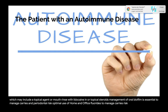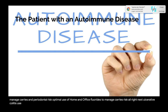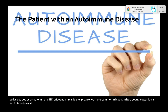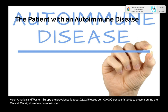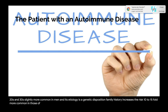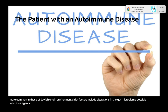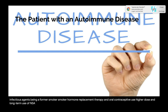Ulcerative colitis (UC) is an autoimmune IBD affecting primarily the colon. It is more common in industrialized countries, particularly North America and Western Europe, with prevalence of about 7.6 to 245 cases per 100,000 per year. It tends to present during the 20s and 30s, is slightly more common in men. Etiology: genetic predisposition — family history increases the risk 10- to 15-fold; more common in those of Jewish origin. Environmental risk factors include alterations in the gut microbiome, possible infectious agents, former smoking status, hormone replacement therapy, and oral contraceptive use.